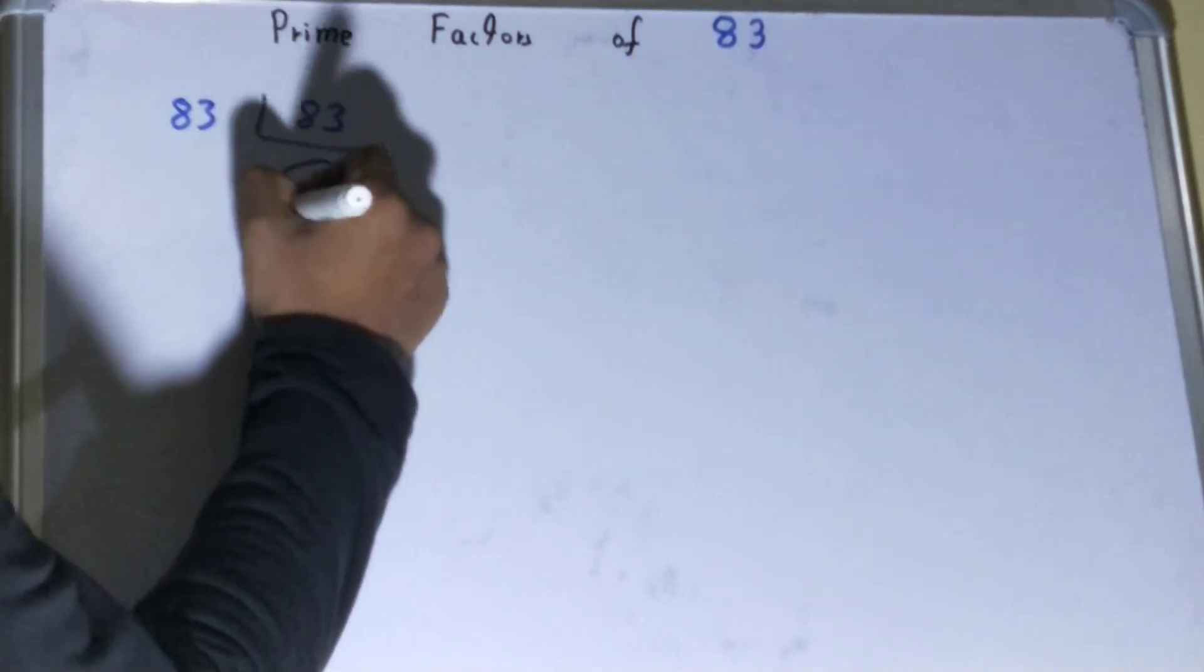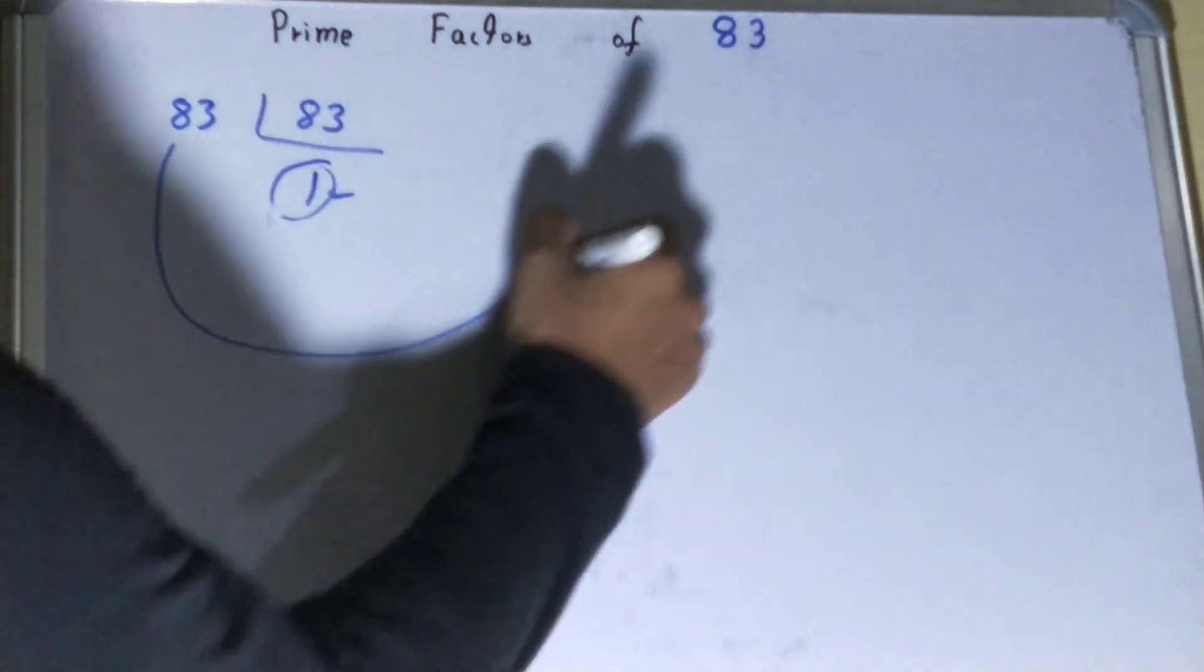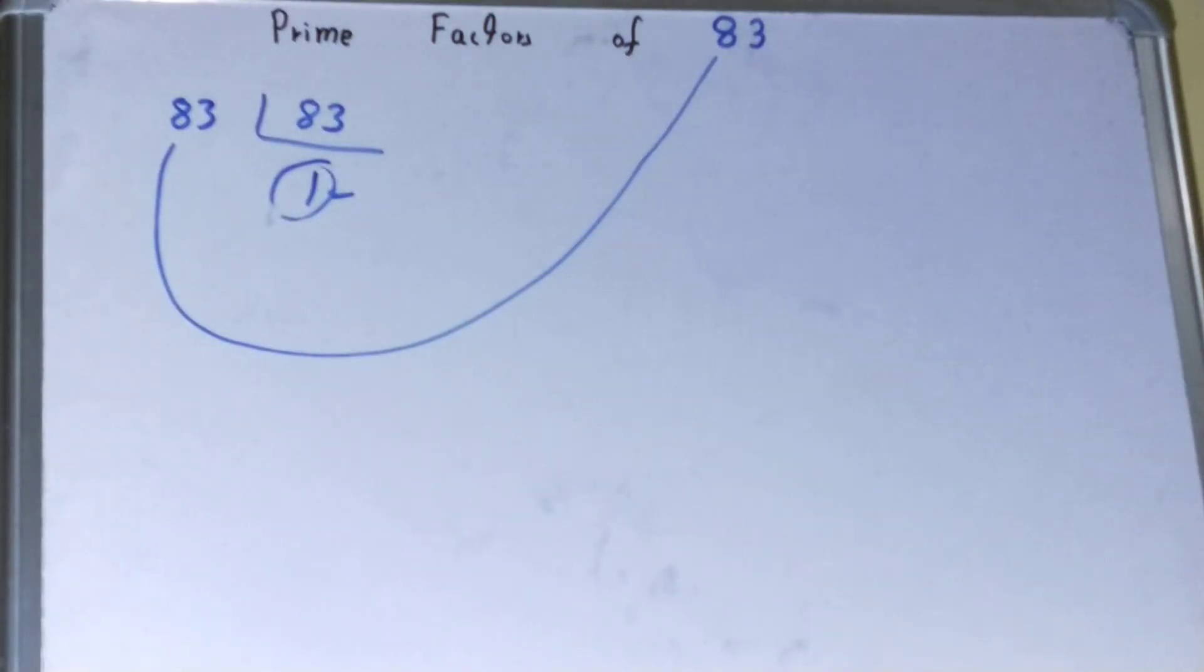so you'll get the value as one. Once you get one, the work is done and whatever you have on the left hand side will be the set of prime factors for the number 83, that is 83 itself. So